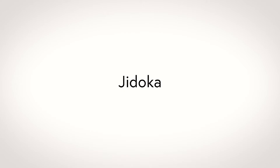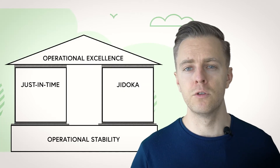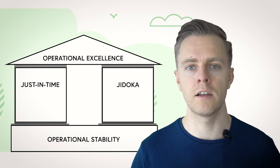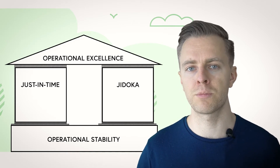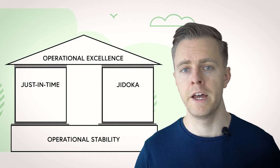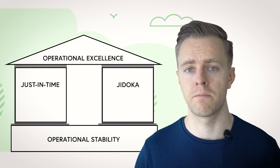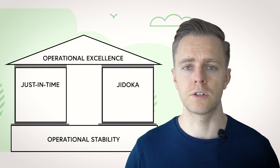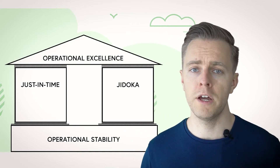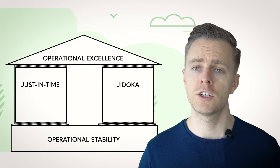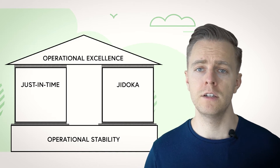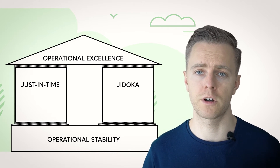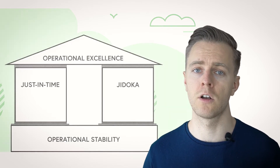Now what is Jidoka? Some of you might have heard of Jidoka already, as it is a central element of the Toyota production system, next to just-in-time production. The Lean Enterprise Institute defines it as the stop and notification of abnormalities and separation of man's work and machine's work.